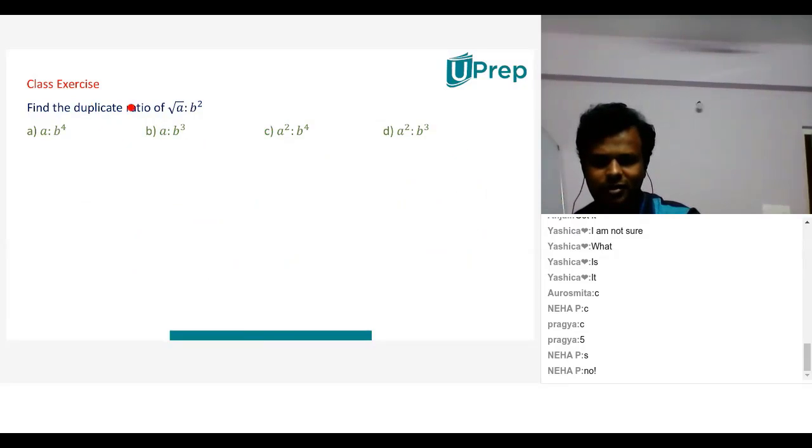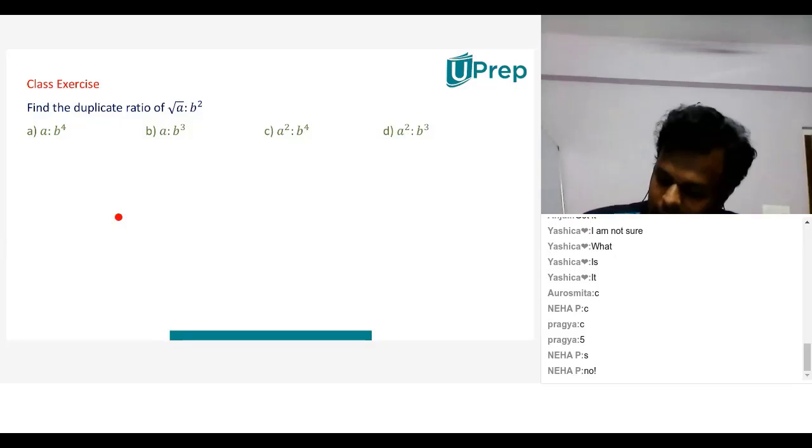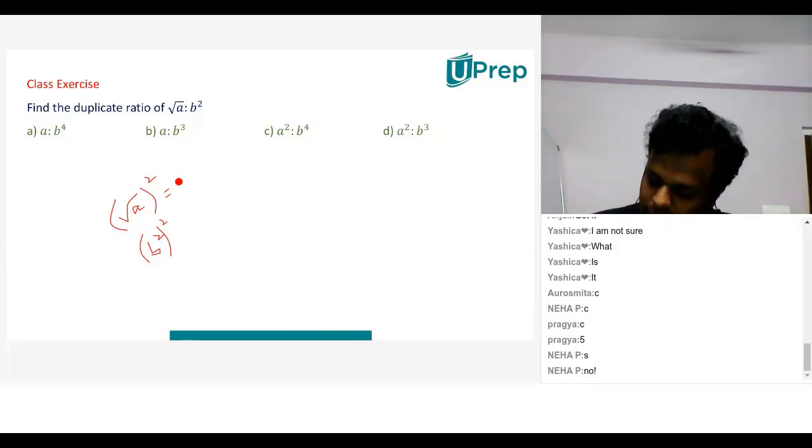So then what will be the answer for this? The duplicate ratio of root of a is to b square. So here duplicate ratio means what? I need to take a root of a square. Root of a square and square of b square. So root of a square will be a.